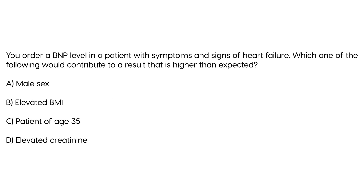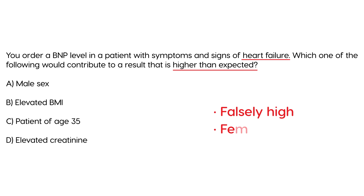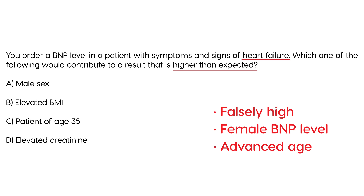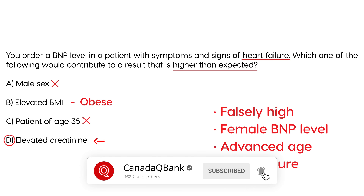Clinical vignette three: You order a BNP level in a patient with symptoms and signs of heart failure. Which of the following would contribute to a result that is higher than expected? This question asks about scenarios causing a falsely high BNP. There are three: female patients, patients advanced in age, and patients with renal failure. Among the answer choices: male sex is not it; elevated BMI (obesity) causes falsely low BNP; age 35 is not advanced age. But elevated creatinine indicates renal failure, so the answer is elevated creatinine.